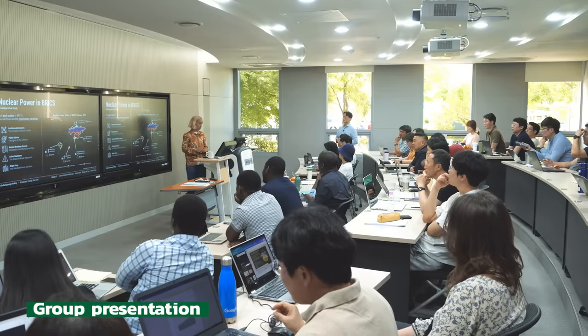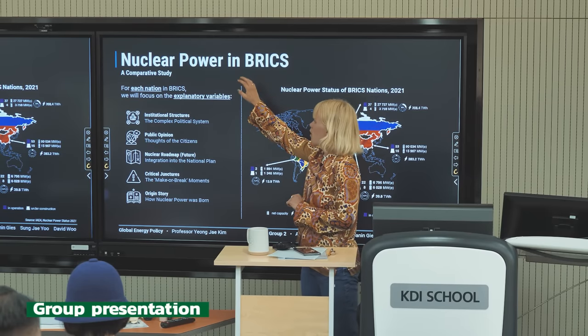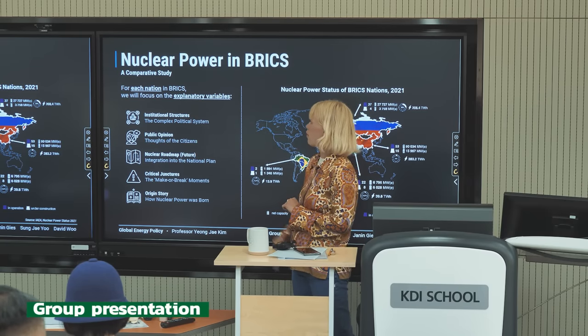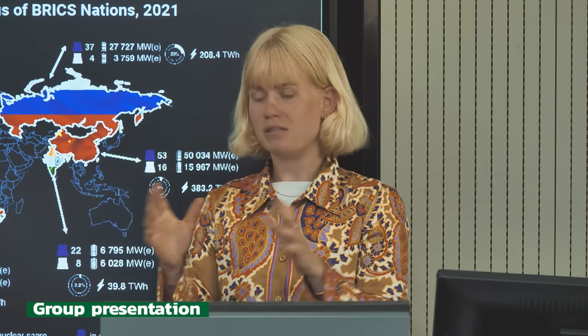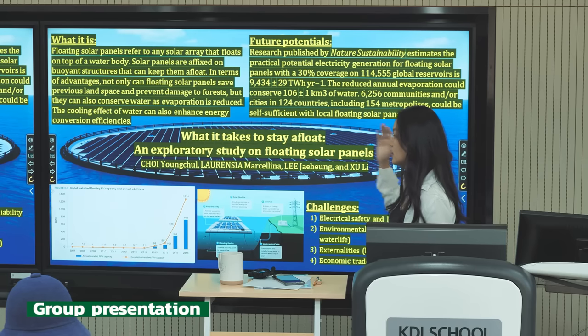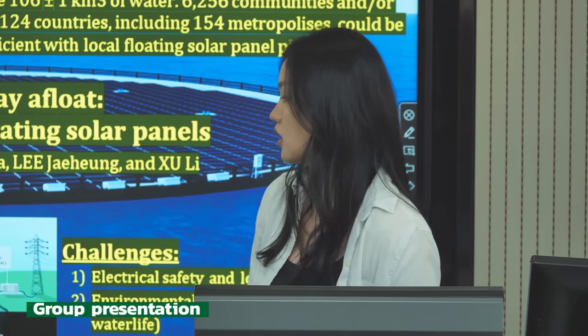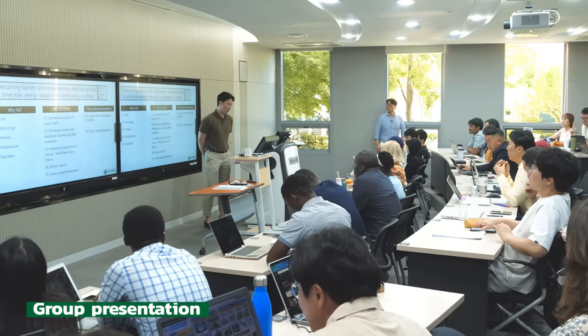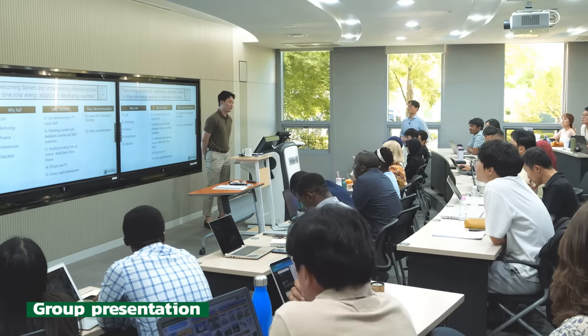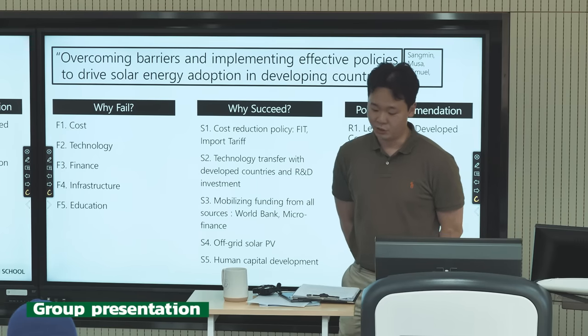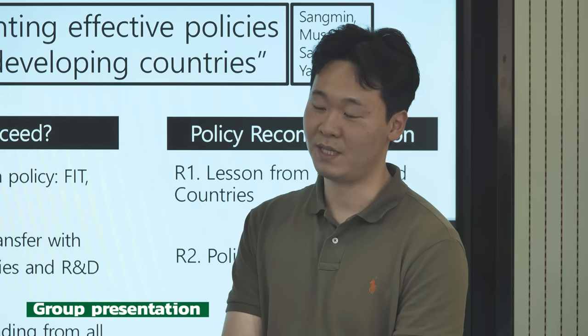Our study focuses on nuclear power in BRICS nations, where we will look at five different explanatory variables. Our topic for the second group is solar energy adoption in developing countries, analyzing cases from Vietnam and Nigeria. There has been a huge increase in global solar installation — these are estimated potentials — and our research also looks at floating solar panels coated to operate on water.